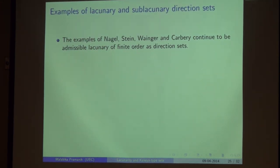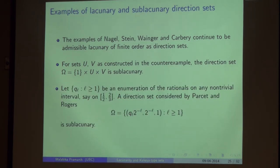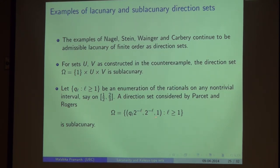Some examples: the Nagel-Stein-Wainger and Carbery direction sets remain admissible lacunary of finite order with the same orders. If you form the direction set (1, u, v) from the earlier U × V construction, that set is sub-lacunary as a direction set. The Parcet-Rogers example is also sub-lacunary: slicing the direction cone with the hyperplane x₂ = 1 and projecting in the x₁ direction gives an enumeration of the rationals Q_l, which is sub-lacunary.